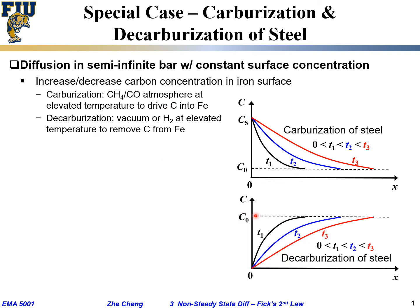Let's say our initial carbon concentration is C0 throughout the material. The moment you put it into hydrogen, the surface carbon drops to zero. As time goes on, at the same location, the carbon concentration decreases over time — from black to blue to red. Or if we look at a fixed concentration, the low-carbon region becomes deeper and deeper into the material.